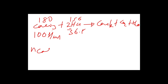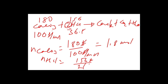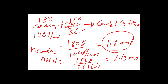The number of moles of CaCO3 = 180 g ÷ 100 g/mol = 1.8 mol. The number of moles of HCl = 156 g ÷ (2 × 36.5 g/mol) = 2.0 mol. Comparing the molar ratios, HCl is the limiting reactant. The correct answer is HCl.